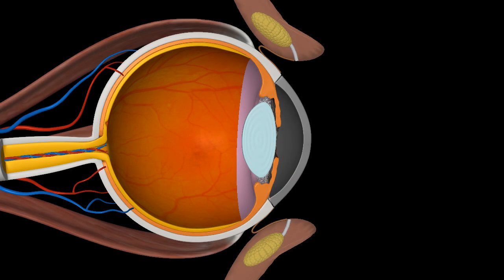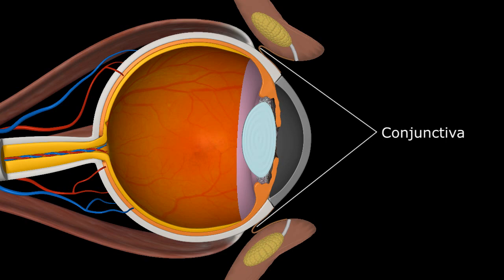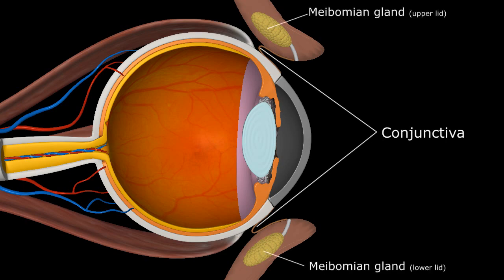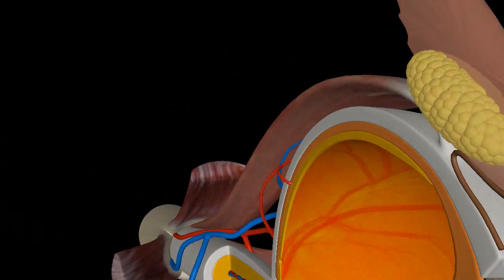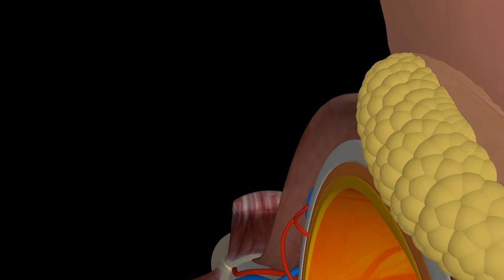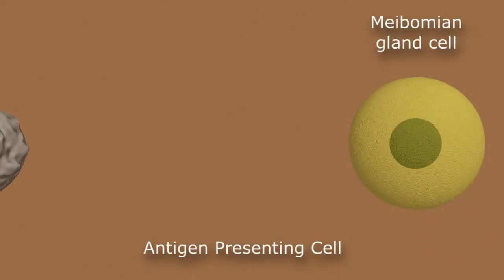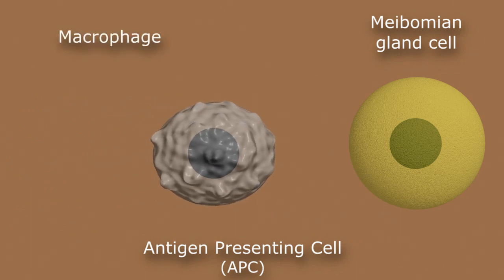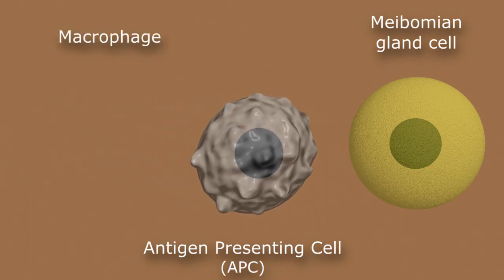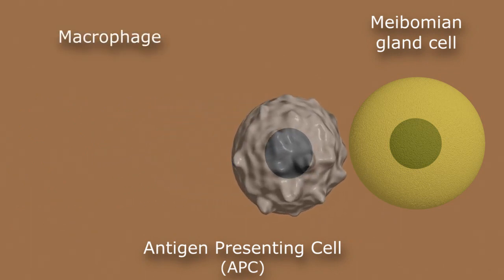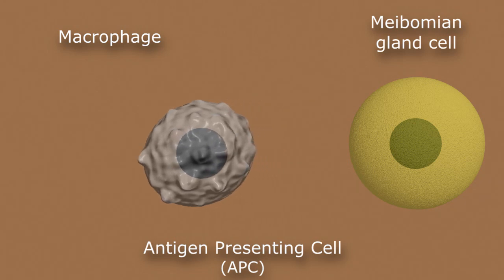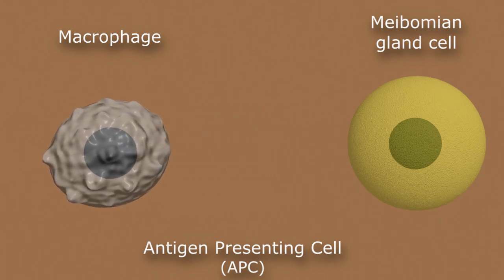For reasons incompletely understood and in susceptible individuals, the patient's own immune system mounts an attack against the lacrimal glands, conjunctival membrane, or meibomian glands. As an example, let's zoom in on an individual cell of the meibomian gland. Antigen-presenting cells, or APCs, such as macrophages or dendritic cells, confuse these structures as foreign antigens and train the immune system to eliminate the threat.